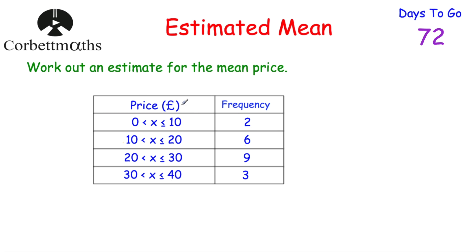We can work out an estimate for the mean. Because if we've got two items that cost between £0 and £10, a sensible guess would be to let them be £5 each - the midpoint. For the six items between £10 and £20, let's let them be £15 each. For the nine items between £20 and £30, let's let them be £25 each. And for the three items between £30 and £40, let's let them be £35 each.